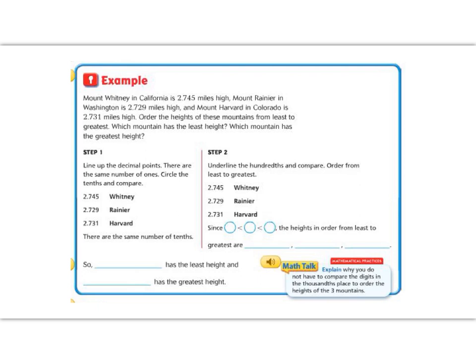Let's continue our lesson with the example problem. It says, Mount Whitney in California is 2.745 miles high. Mount Rainier in Washington is 2.729 miles high, and Mount Harvard in Colorado is 2.731 miles high. Order the heights of these mountains from least, that's the smallest, to greatest. Which mountain has the least height? Which mountain has the greatest height?